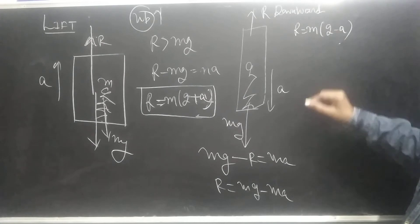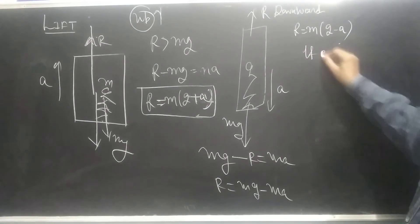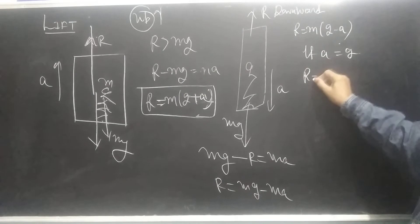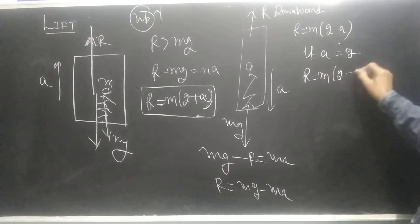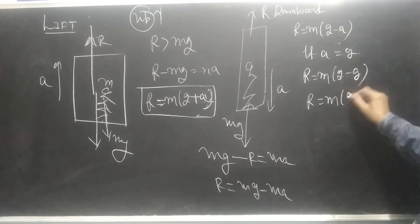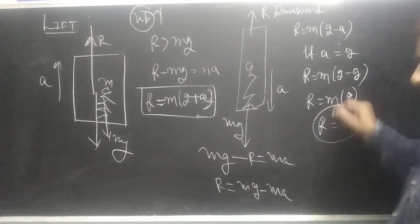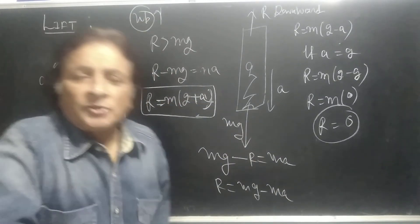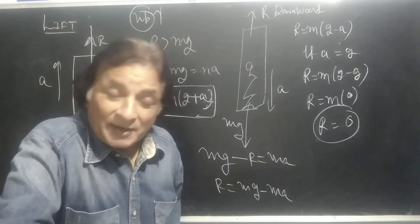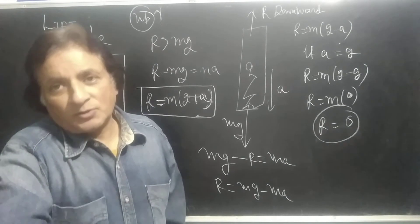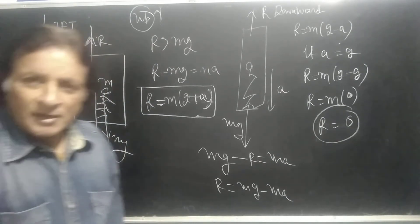Now note that if A is equal to G, then R is equal to M into G minus G, R is equal to M into zero. So what will your normal reaction be? Students, zero. This means that there will be no weight experienced by you. You will be in the state of weightlessness.